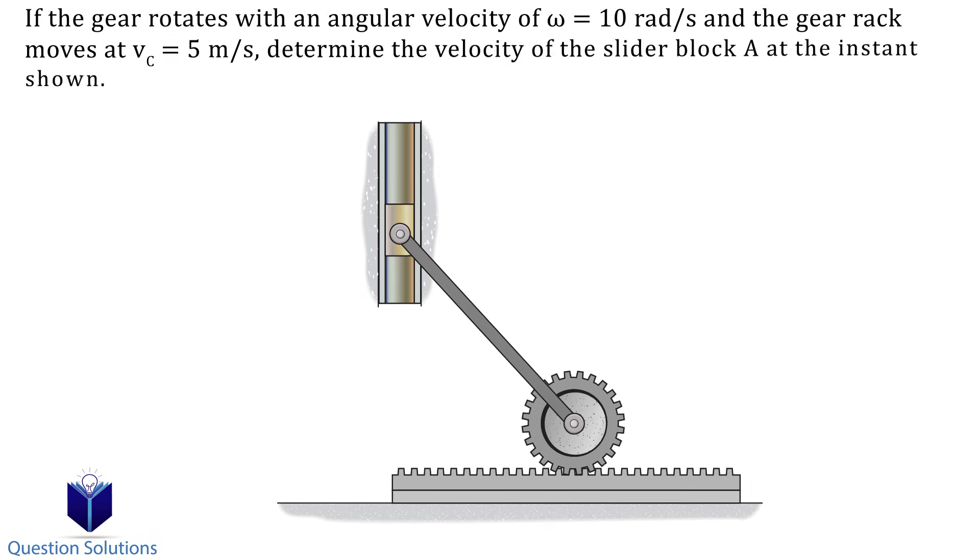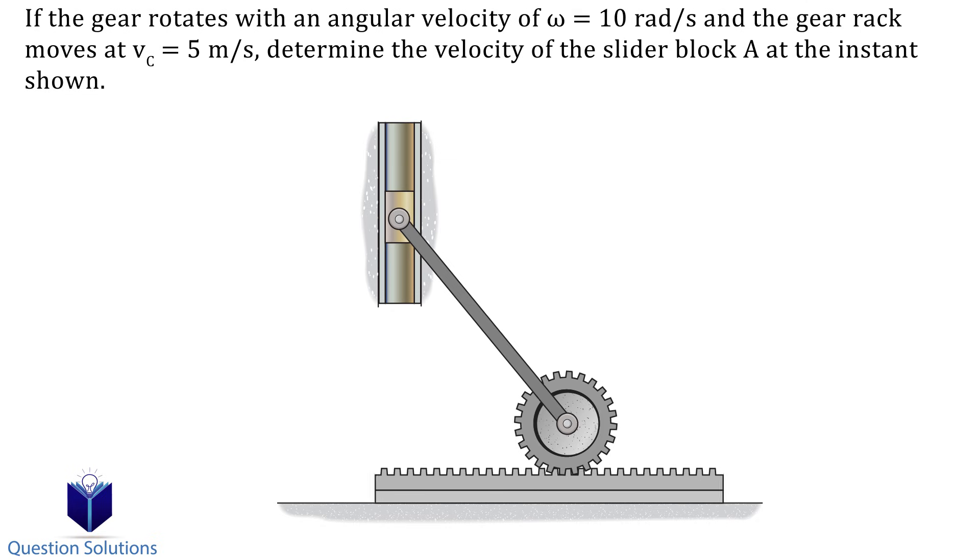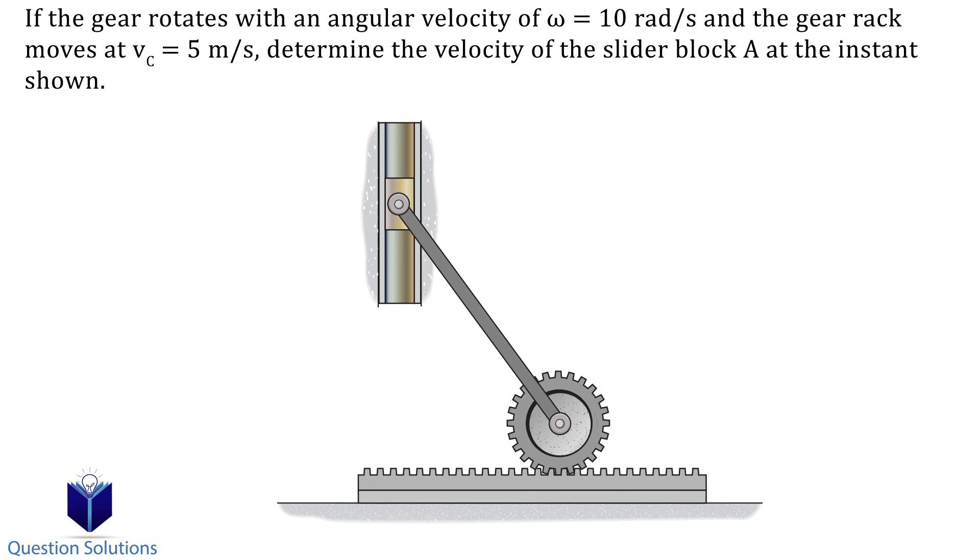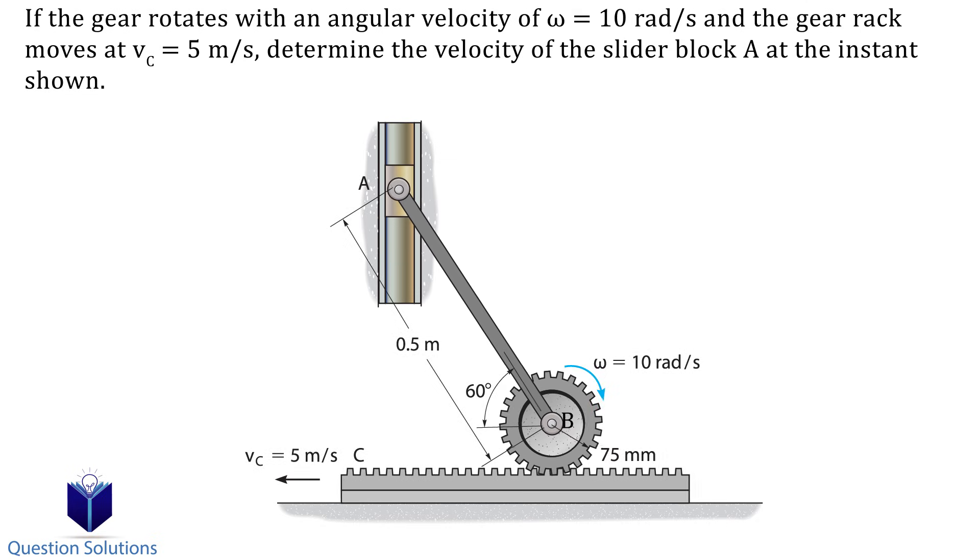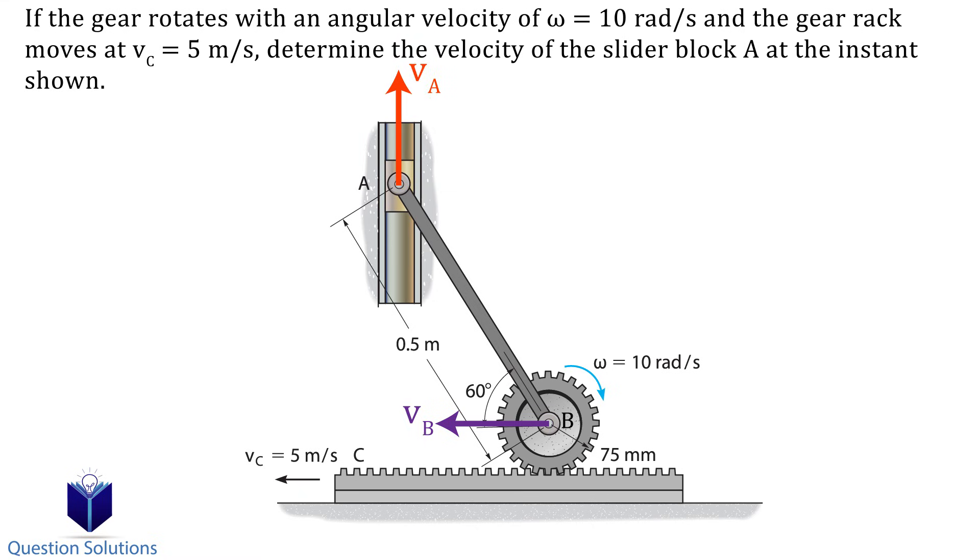Let's take a look at this example where we need to find the velocity of slider A at the instant shown. In this problem, there are a lot of moving parts. So the way we will solve it is by first finding the velocity of point B. Once we have that, we can use it to figure out the velocity of slider A. So let's get started by first figuring out the velocity of point B.